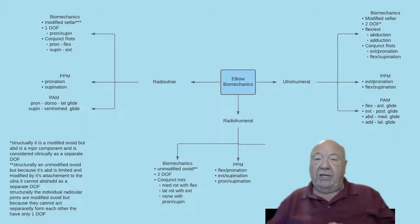So the abduction-adduction component, which normally would only be considered conjunct rotation, is so important biomechanically that it is considered as a separate degree of freedom and it's assessed as such. So functionally, this would be an unmodified sellar with two degrees of freedom: flexion-extension and abduction-adduction.